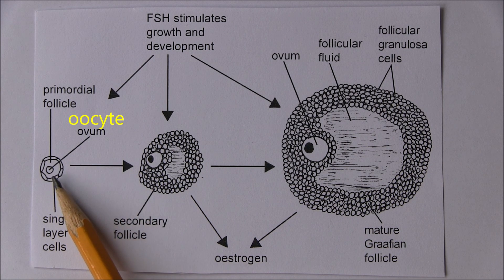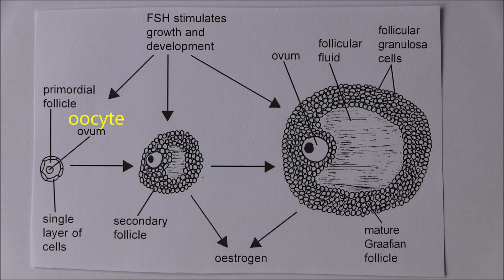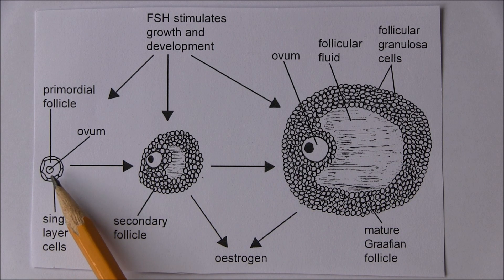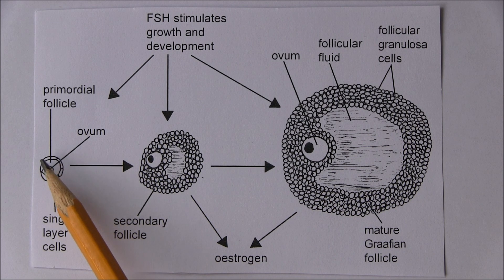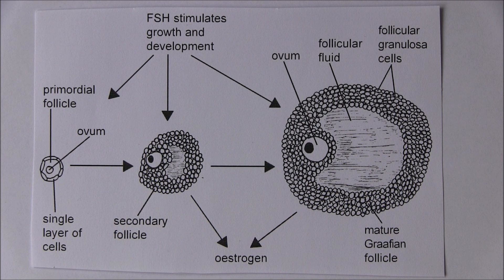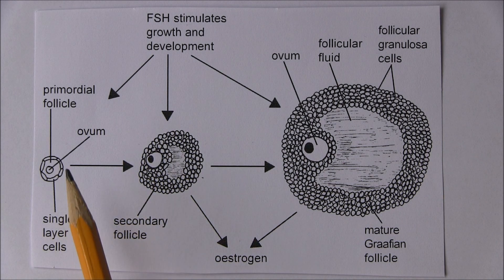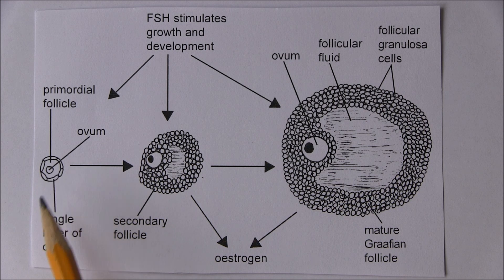These oocytes — the immature ovum — are arrested in prophase of the first meiotic division. So the oocytes in there are arrested in an early stage of meiosis. We also see that the oocyte is surrounded by a single layer of ovarian flattened epithelial cells, called granulosa cells.